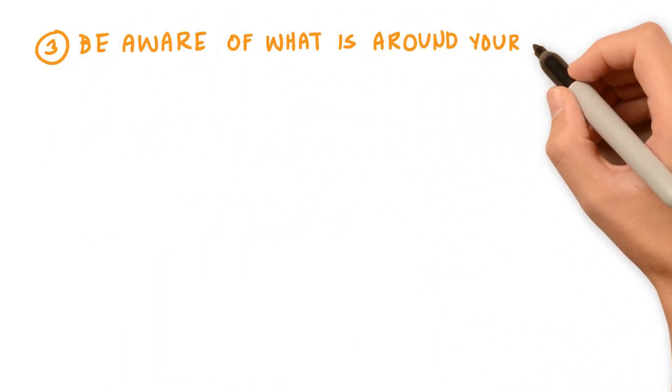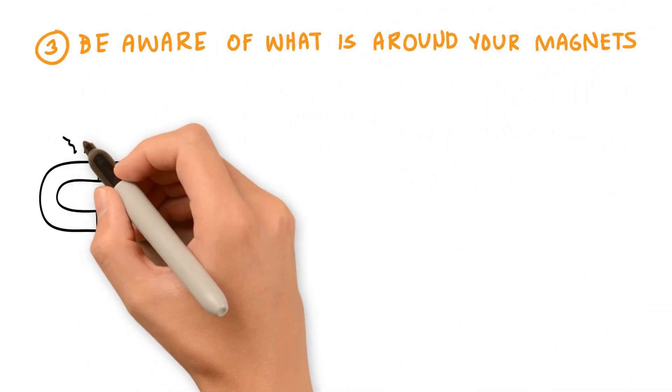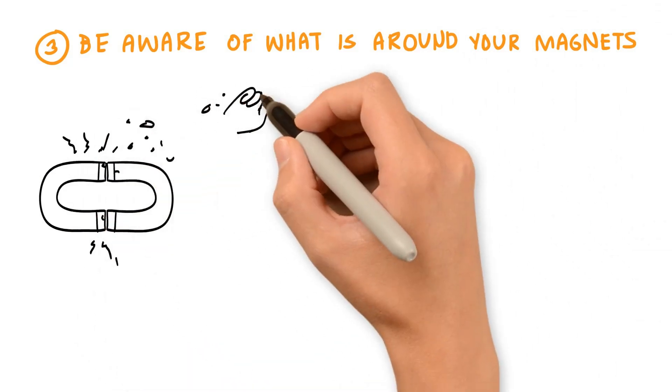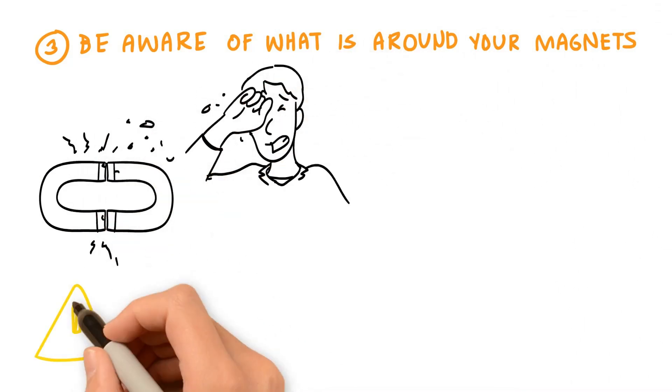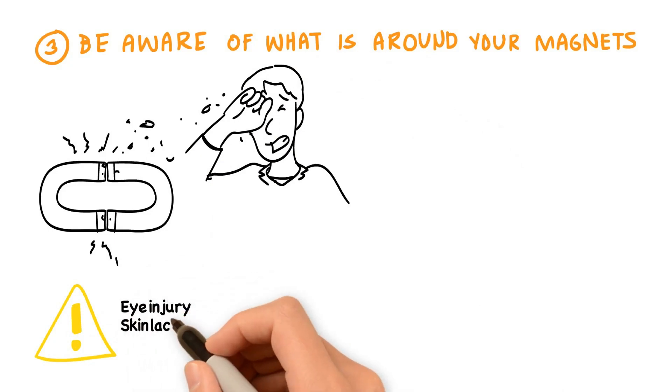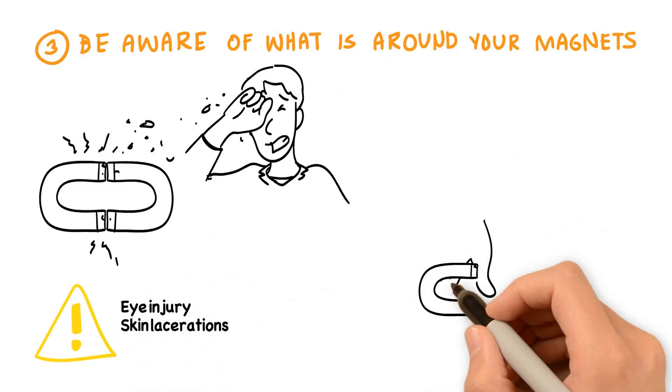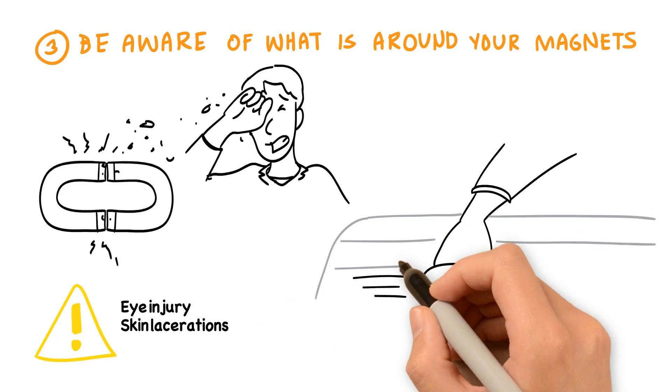Magnets can fly together or to steel objects if they are in close proximity. This can cause severe pinching and lacerations to your skin, shattering of magnets, and equipment damage. Don't put a magnet down on any surface or relocate it to another area until you are certain that it is safe.